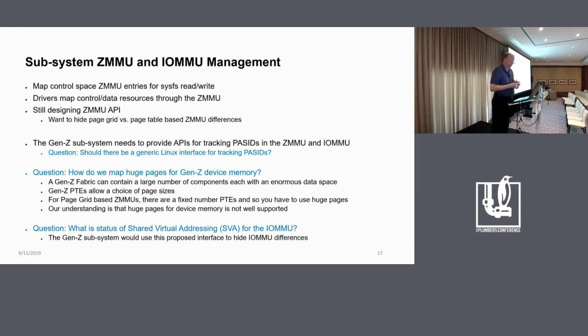And there's a whole host of reasons right on the slide here for why we think Gen Z really could benefit from that. First off, as I mentioned before, there's a huge number of components possible, and each of them can have a huge data space. And if you're trying to map all of those with 4K pages, you're going to be sad. So big pages help solve that problem, at least mitigate it. Especially in the PageGrid case, since there's so few PTEs in the device, they tend to have a huge range of page sizes available. The bridge I mentioned before supports everything from 4K to 256 terabyte pages. So we'd like to be able to take advantage of that in the ZMMU. And then the third question on this slide is, again, about IOMMUs because we've seen patches posted over the last year or so about shared virtual addressing and making a common interface to IOMMUs.